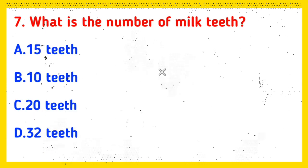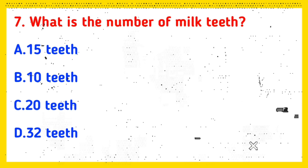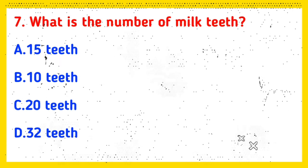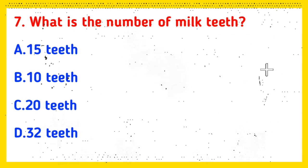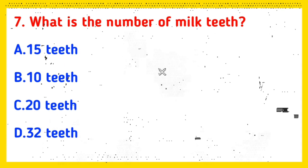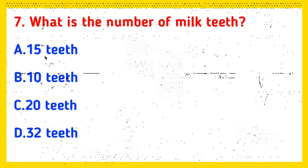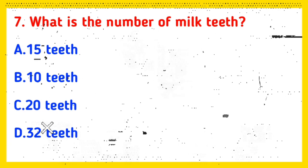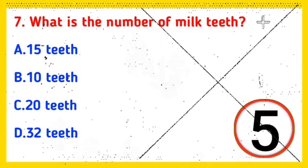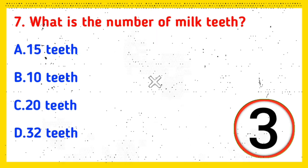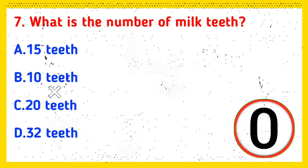Q7: What is the number of milk teeth? Option A: 15 teeth, Option B: 10 teeth, Option C: 20 teeth, Option D: 32 teeth.